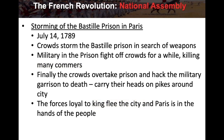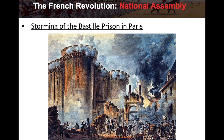On July 14th, 1789, the storming of the Bastille takes place. The Bastille was a prison in Paris, and crowds stormed it in search of weapons. The military in the prison, loyal to the king and aristocrats, fought off the crowds for a while, killing many commoners. But finally the crowd overtook the prison, hacked the military garrison to death, stuck their heads on spikes, and walked through the streets of Paris. The forces loyal to the king fled, and Paris was in the hands of the people.